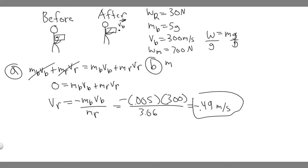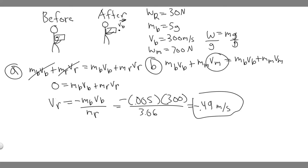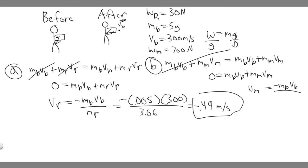The equation is: mass of bullet times velocity of bullet plus M_M times velocity of man equals M_B times V_B plus M_M times V_M — where M_M represents the combined mass of the man and rifle. The initial side is zero again because both the bullet and the man-rifle system start at rest. So: 0 equals M_B times V_B plus M_M times V_M, and we solve for V_M.